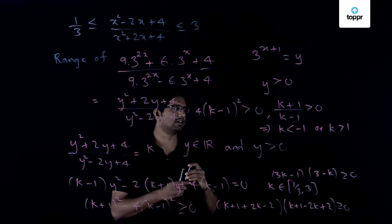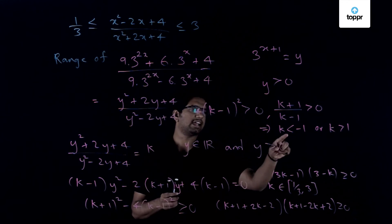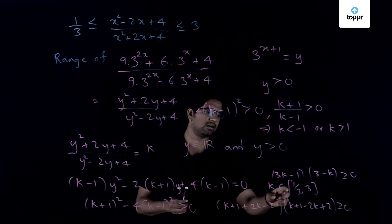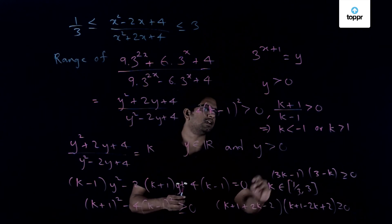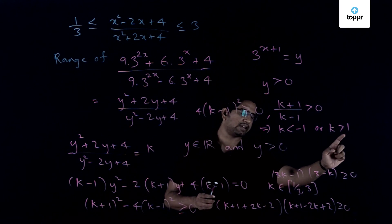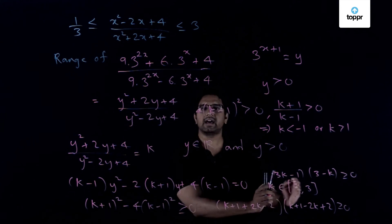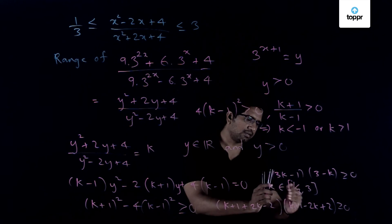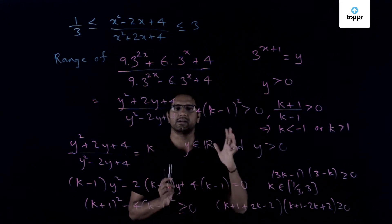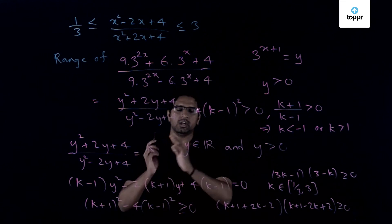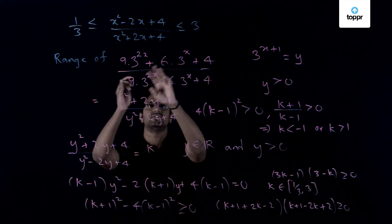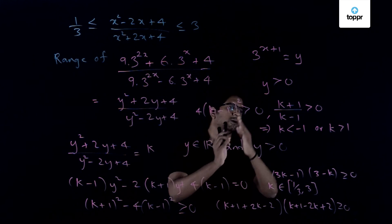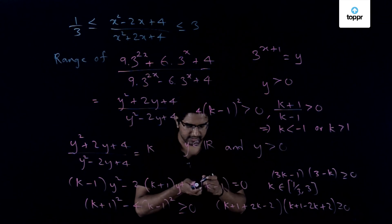Alright, so now let us analyze the cases here. So k less than -1, it's not possible because we have already got that k should lie in this interval. So now looking at k greater than 1 and that has got an intersection with this interval and hence one can conclude that the value which or rather the range of this function is equal to (1, 3]. So that is the important thing.